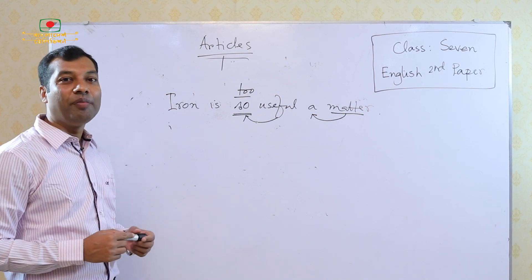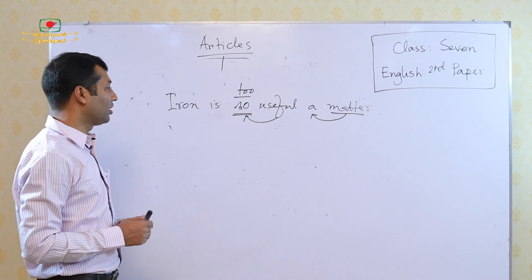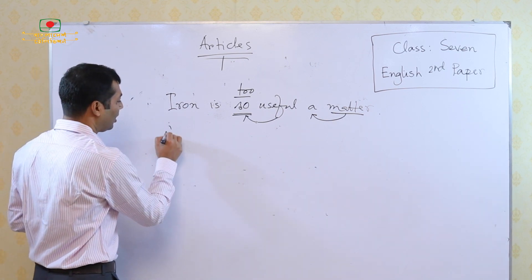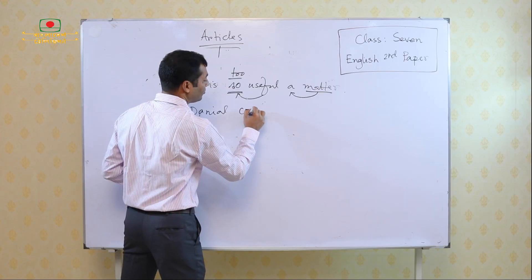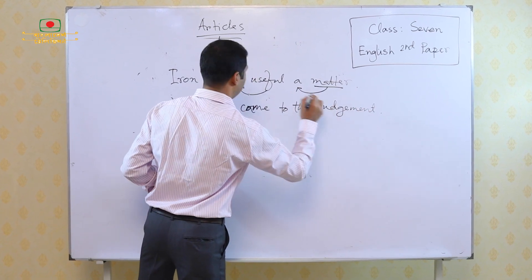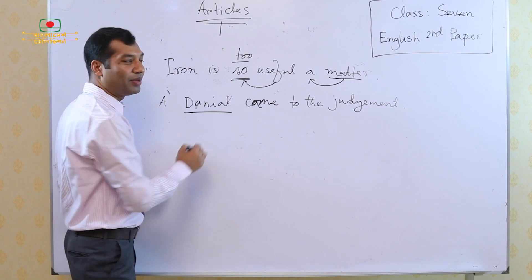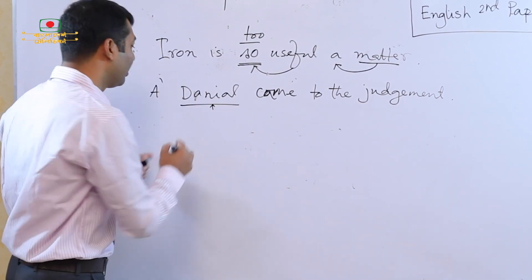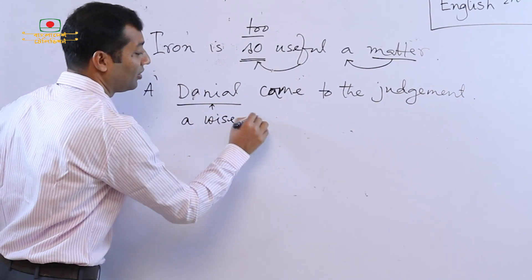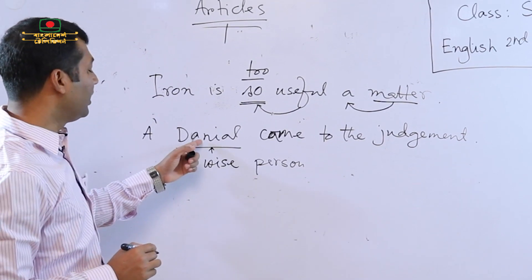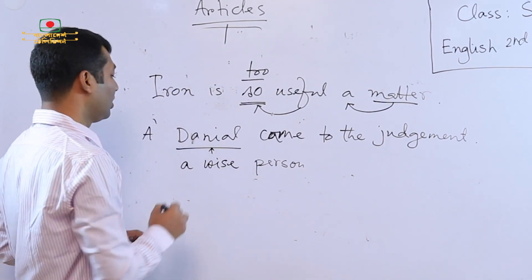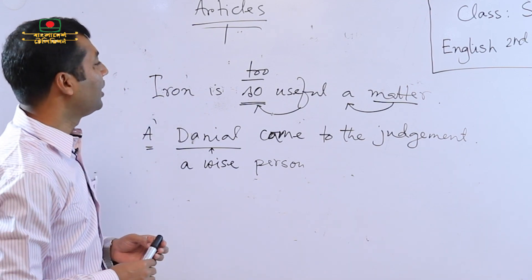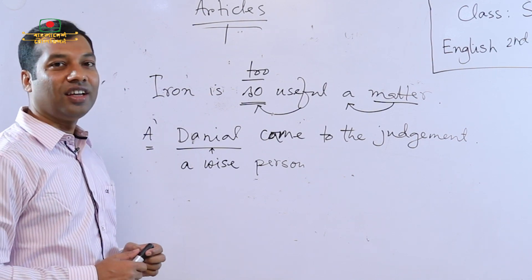Sometimes some proper nouns are made into common nouns. And in this case, if you want to make a proper noun a common noun, we need to use an article. For example: 'A Daniel came to the judgment.' You know that Daniel is the name of a person — basically, this is a proper noun. But here it is working as a common noun. Here, Daniel means a wise person. So Daniel is basically a proper noun, but it has been used as a common noun. So in this case, you need to use the article A or AN before the proper noun.